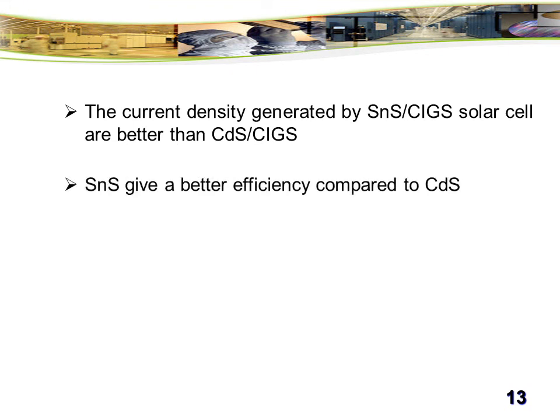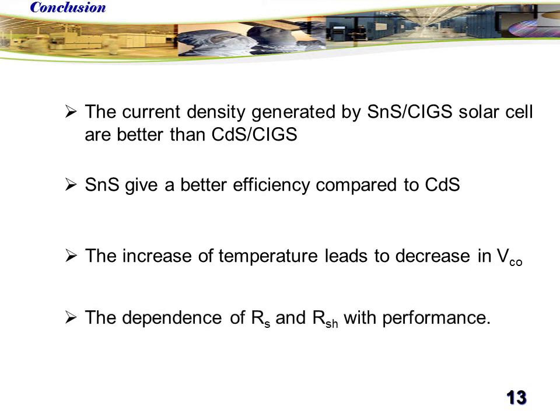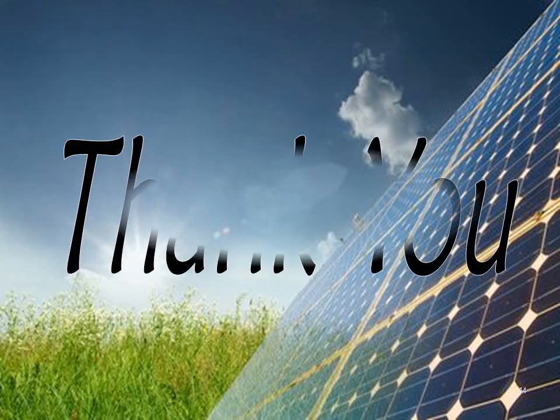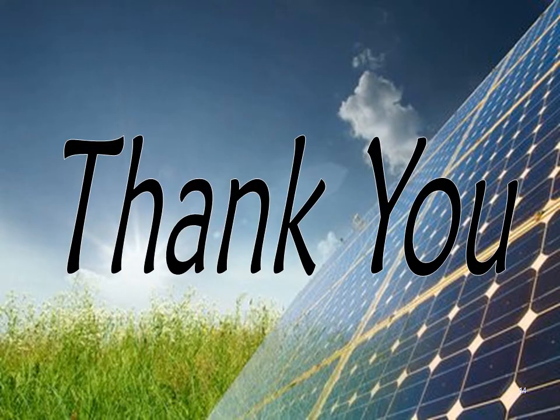We can note that the structure with tin sulfide gives a better efficiency compared with structure with cadmium sulfide buffer layer. The increase of temperature leads to decrease in voltage. We found that the dependence of series resistance and shunt resistance affects performance of solar cells. Thank you for your attention.